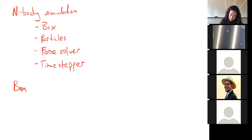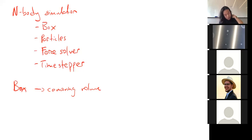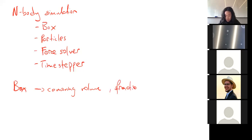The box is essentially the comoving volume of the universe. Because of limitations on computational resources, you're never going to simulate the entire universe — that would cost too much — so the box is just a subset, a fraction of the observable universe.